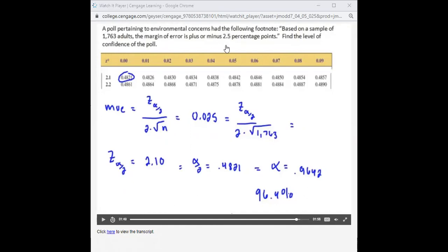So we're going to take our 2.5 percentage points and change it to a decimal. Take 2.5 and divide it by 100 to get 0.025. The z alpha over 2 stays, 2 stays, and instead of putting n, we're going to take this 1,763 and put it here.